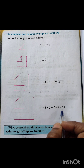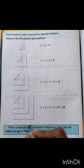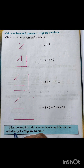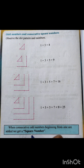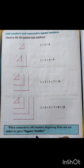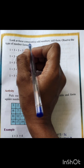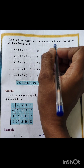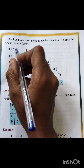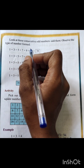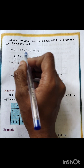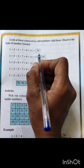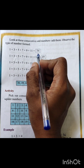Same way, if you add consecutive — meaning continuous — odd numbers, you are going to get square numbers. When consecutive odd numbers beginning from one are added, we get a square number. Look at these consecutive odd numbers, add them, and observe the type of number formed. One plus three plus five plus seven plus nine plus eleven gives you thirty-six.